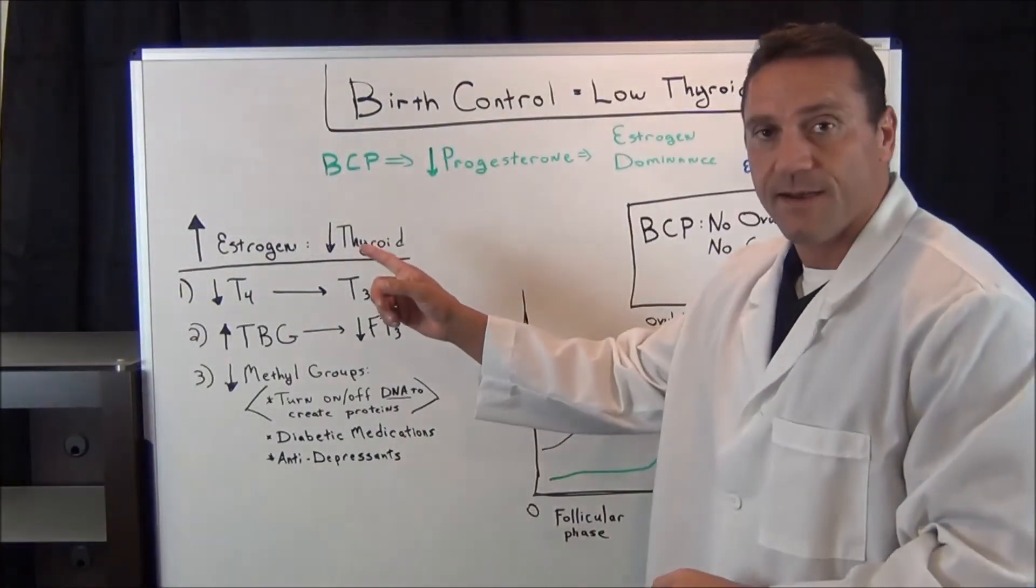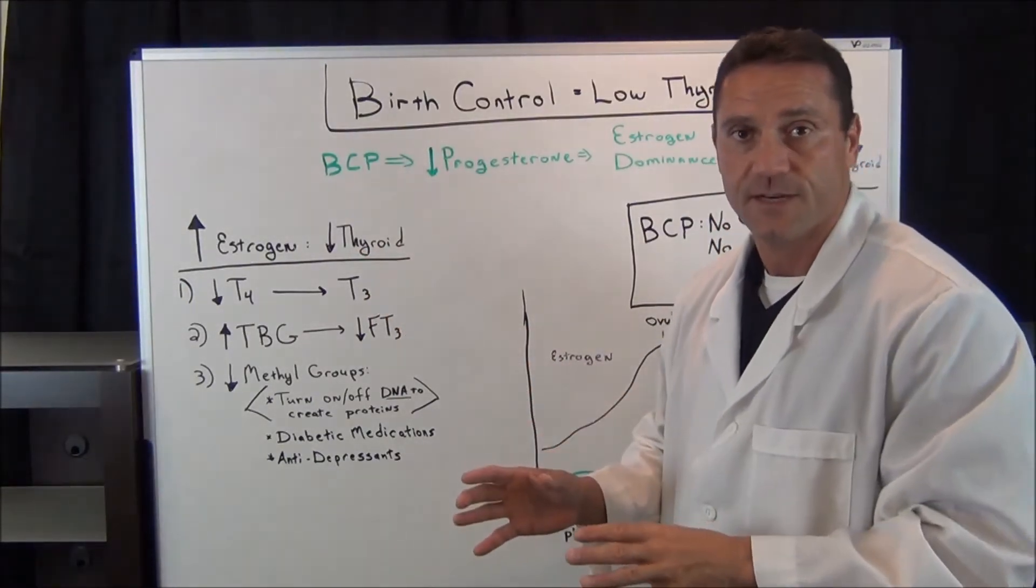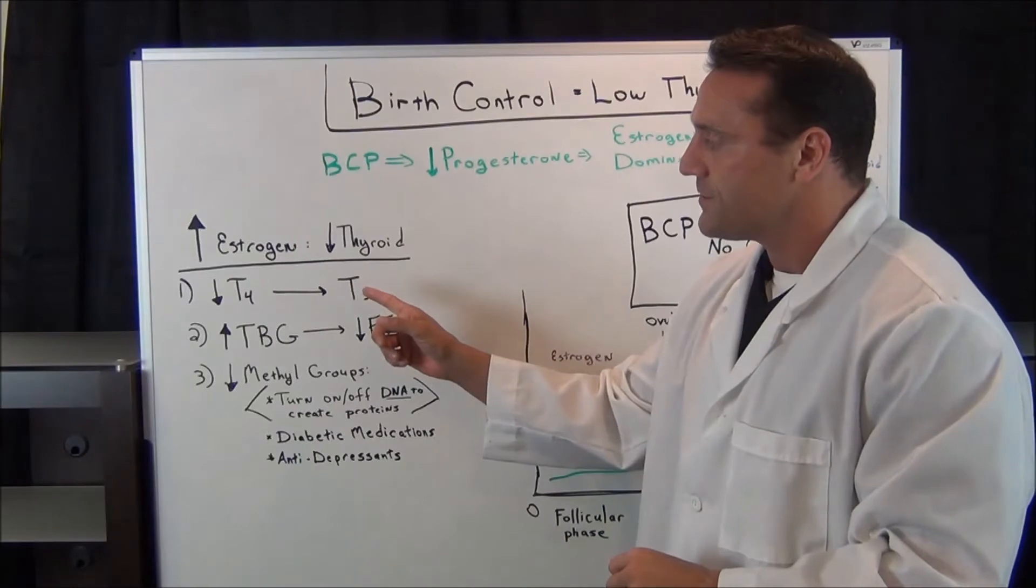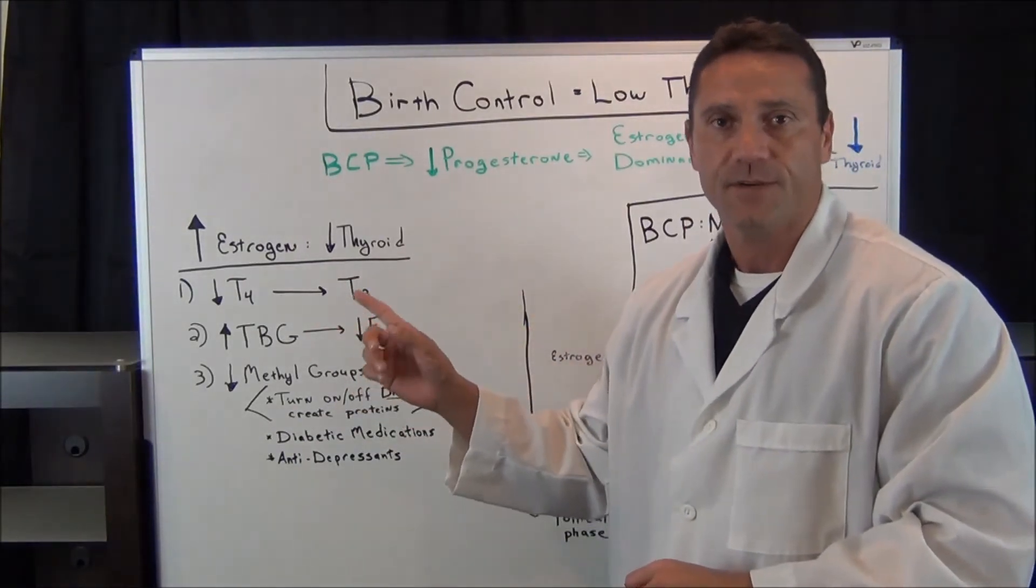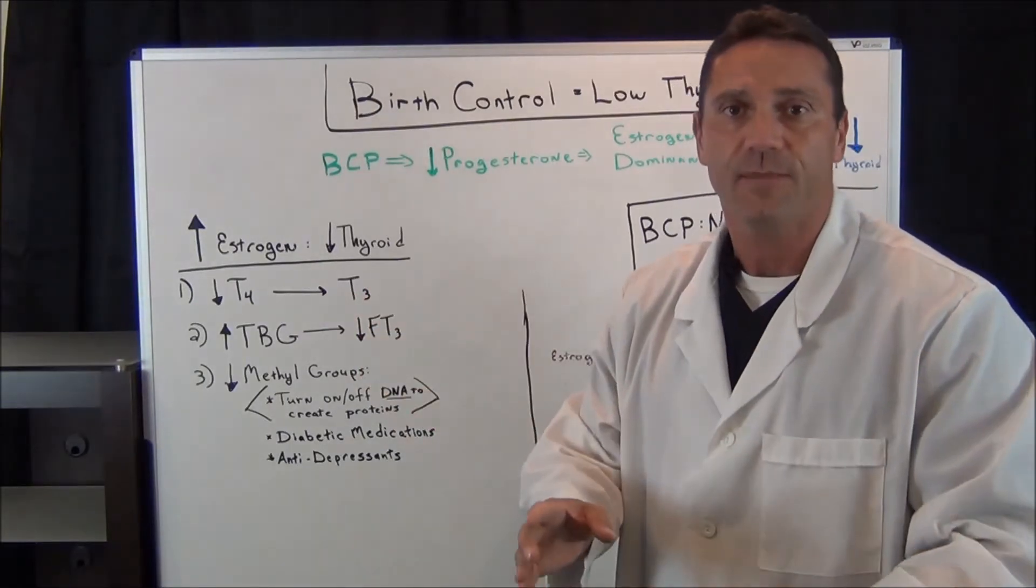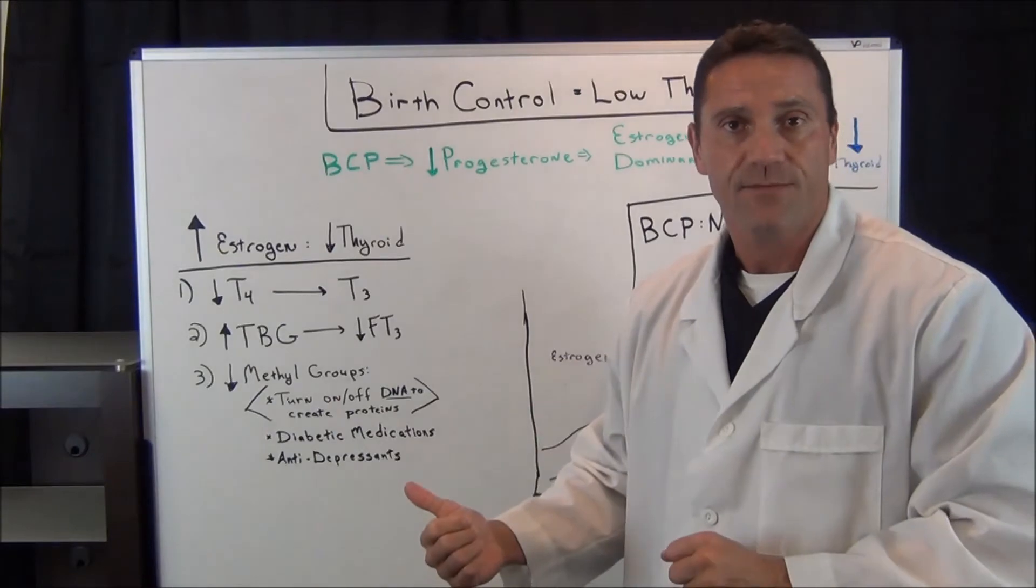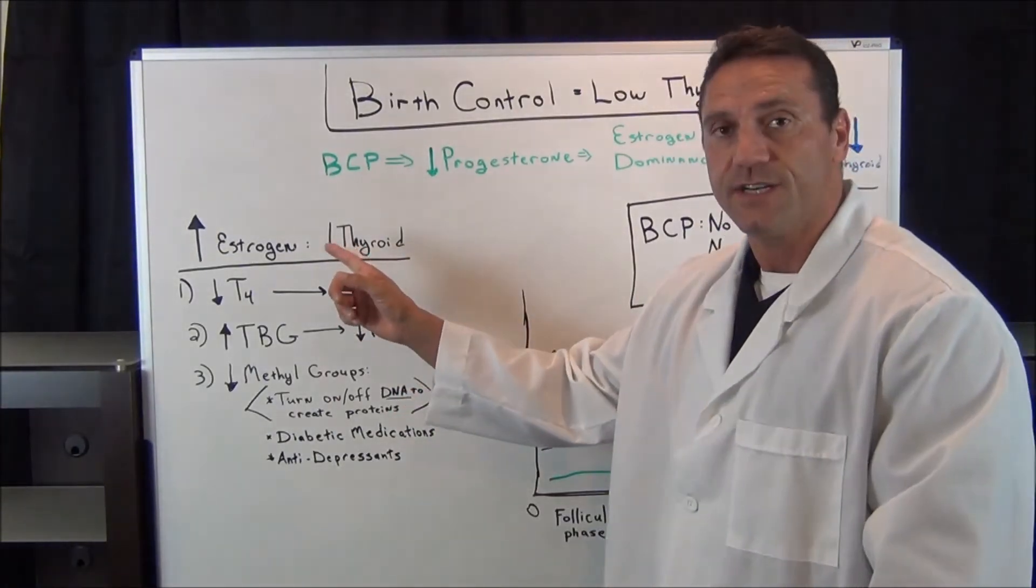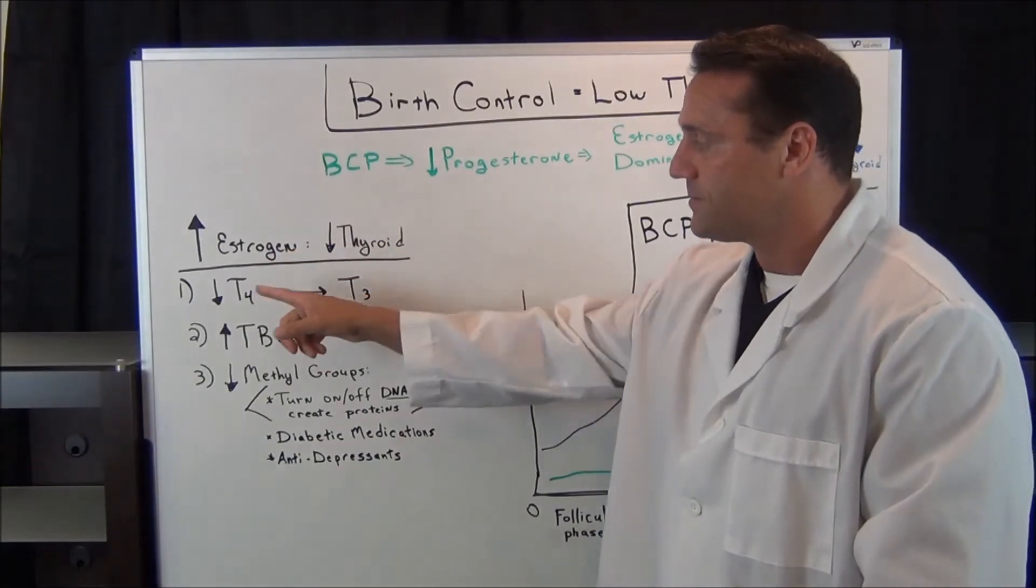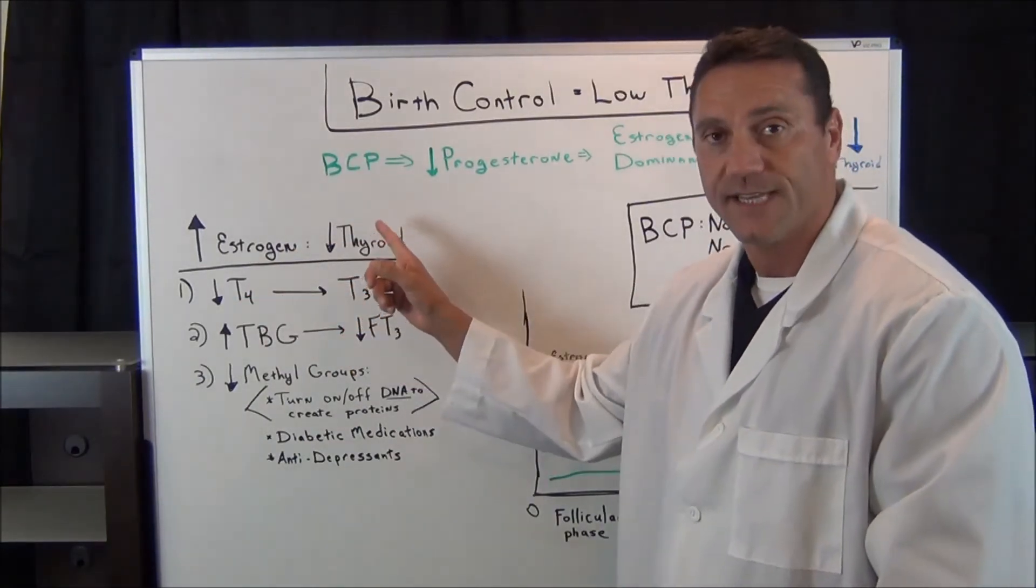So when you're estrogen dominant, how it decreases the thyroid, there's three different ways I'm going to explain it. One is the conversion factor. T4 is produced in the thyroid gland in inactive form, and then it's circulated throughout the system to active T3. And that's conversion. When you have high estrogen in your system, it lowers the conversion from inactive T4 to T3. So this could be one of the reasons why you have a low functioning thyroid.